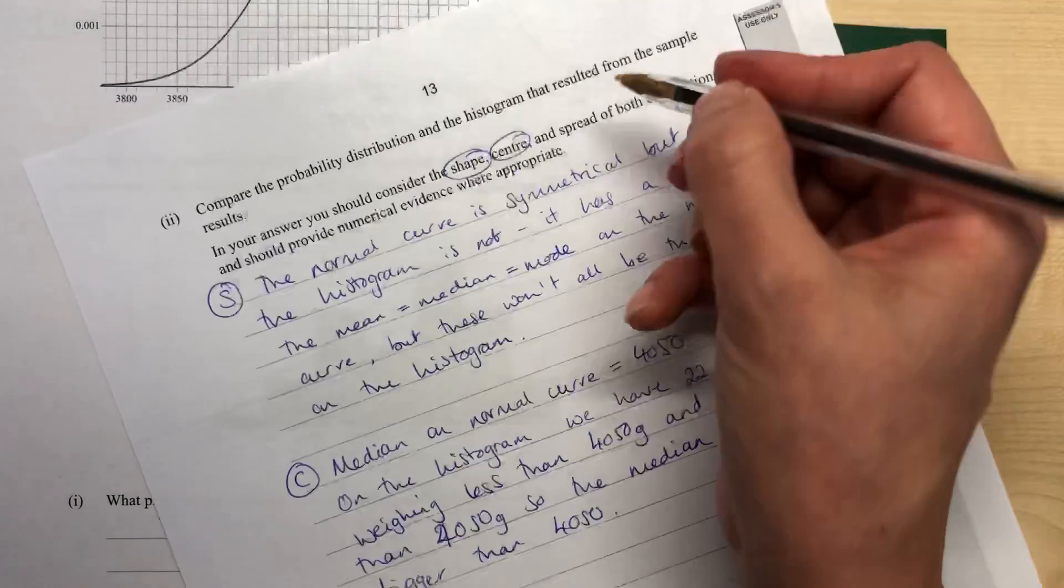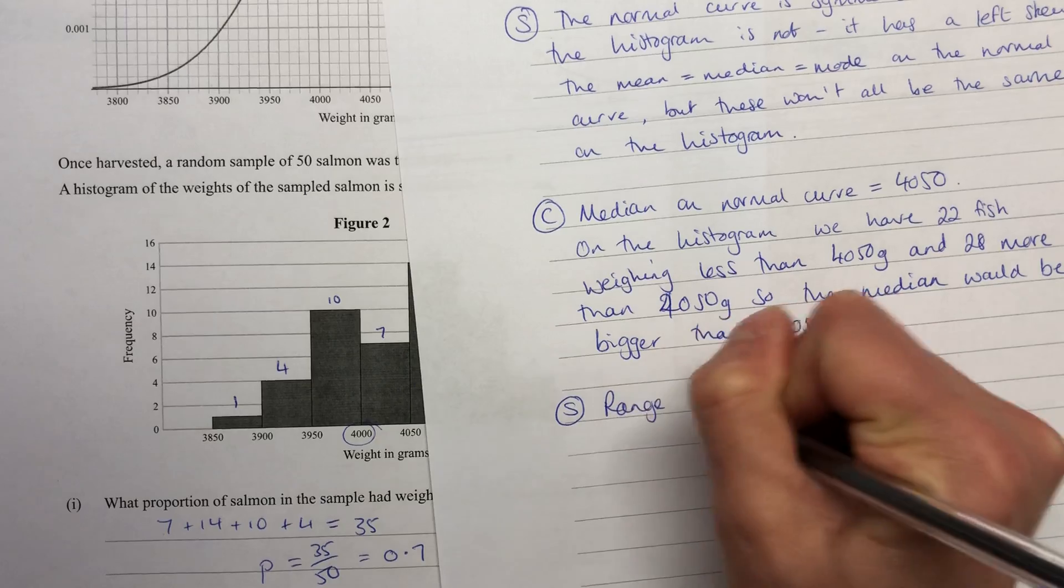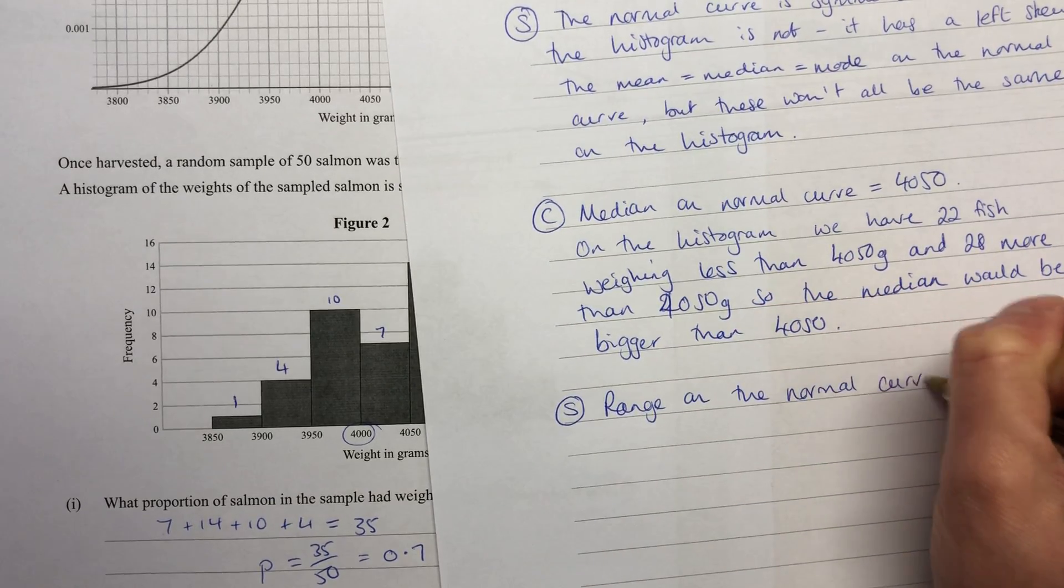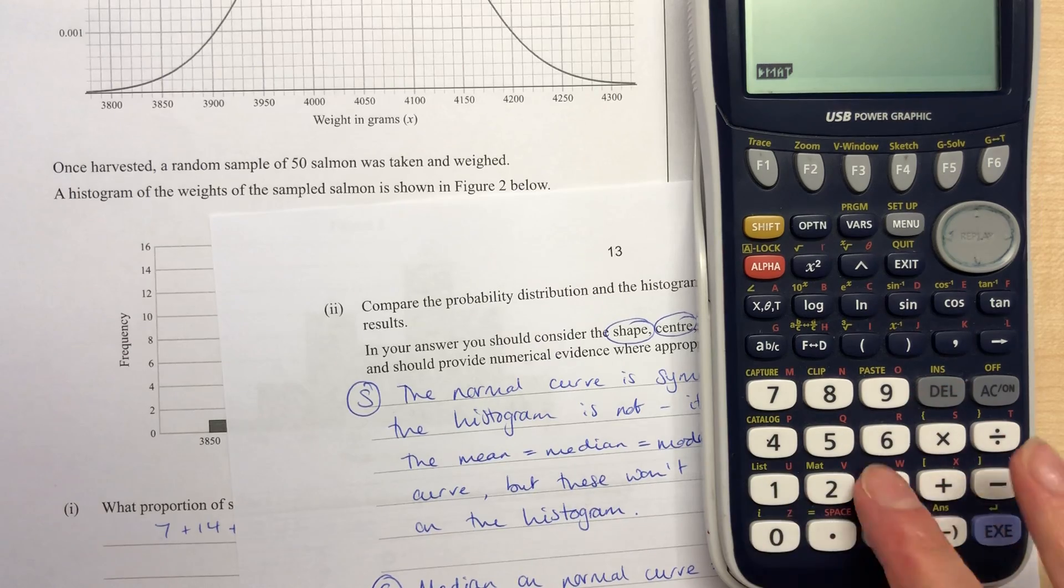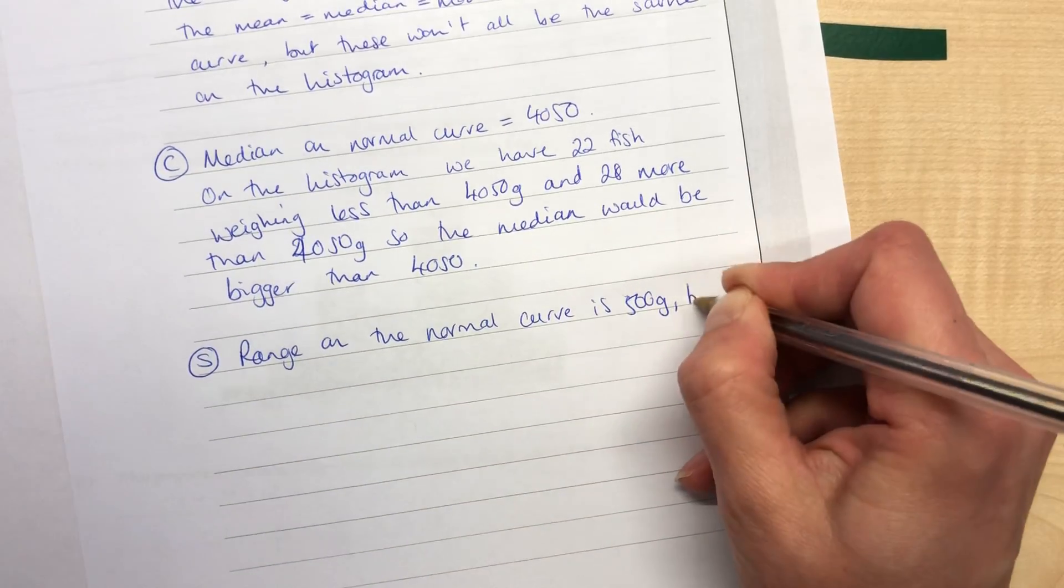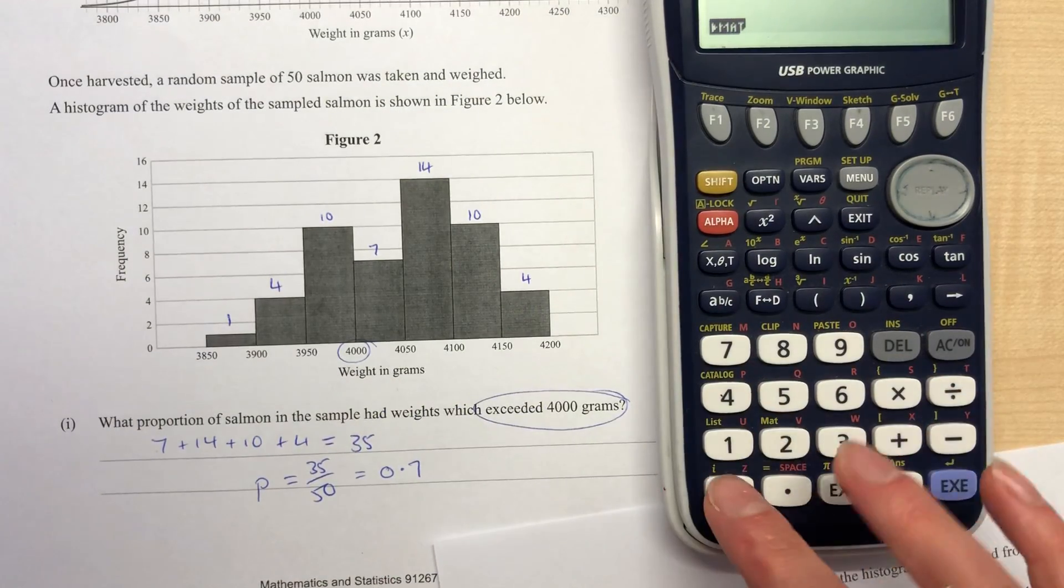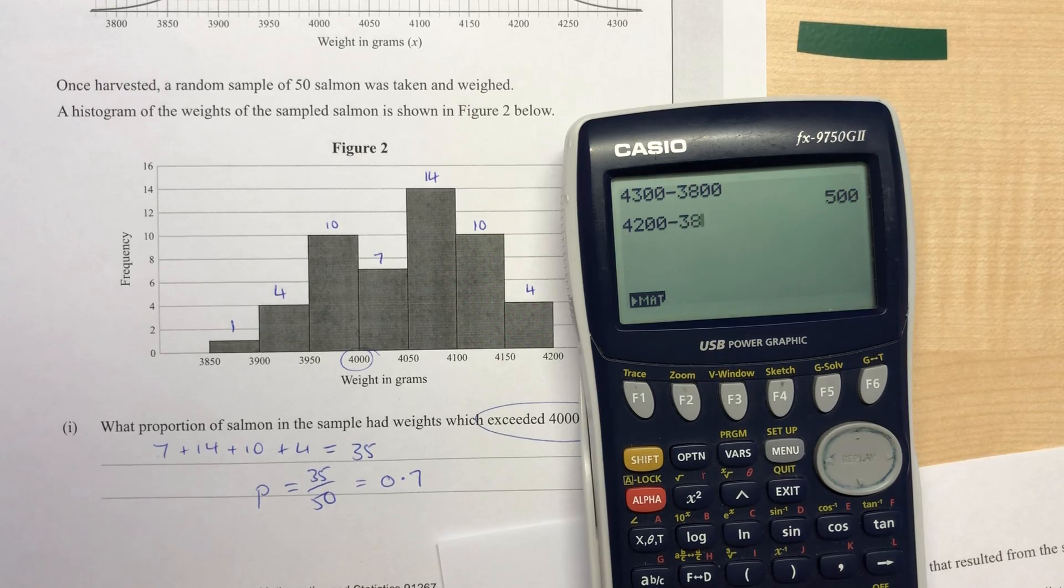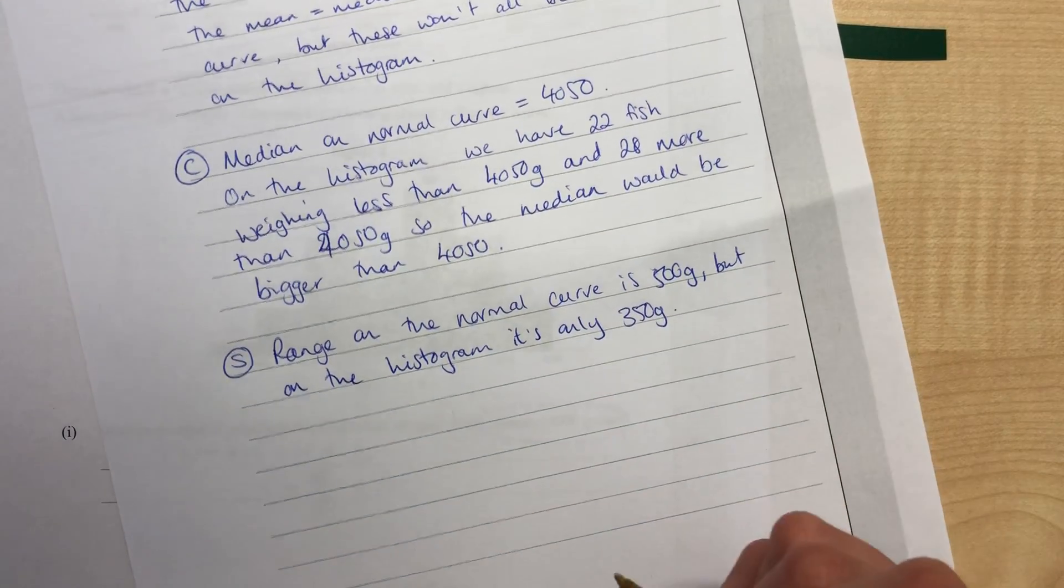So then we can look at the spread that it suggests to have a look at. So if we think about spread, the range on the normal curve is, if we go to the top here, we've got 4,300. Take away 3,800. So our range is 500 grams. But on the histogram, it's only, now I can see that it's going to be less. So 4,200 take away 3850. It's 350.